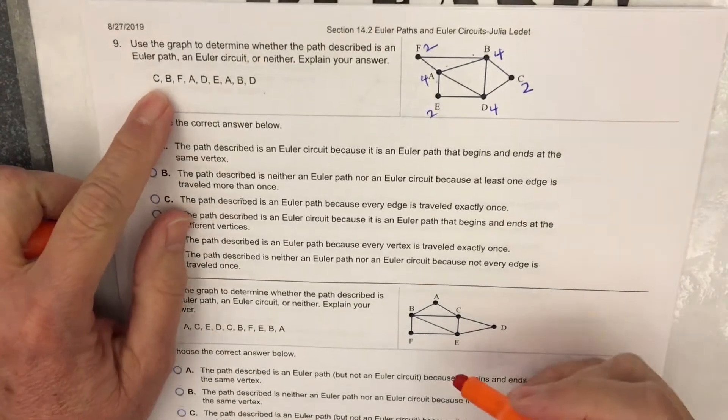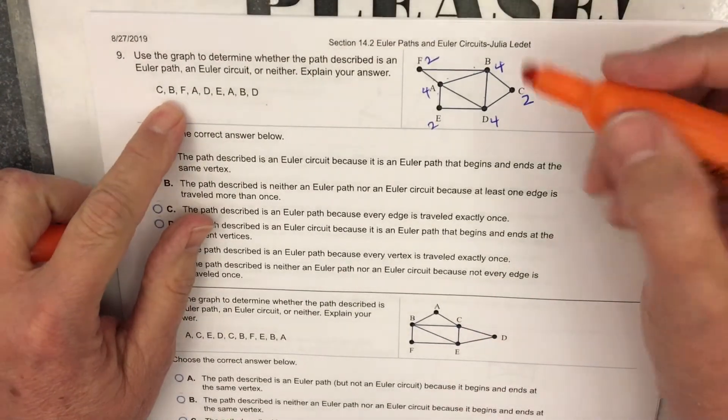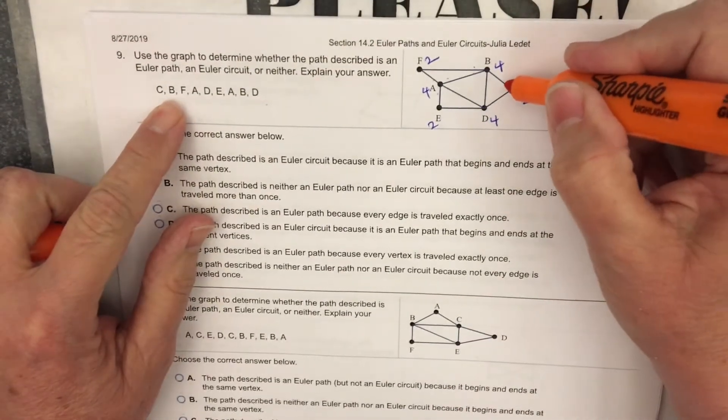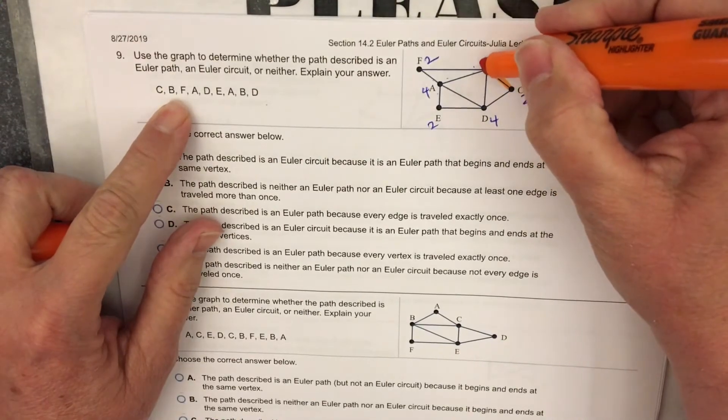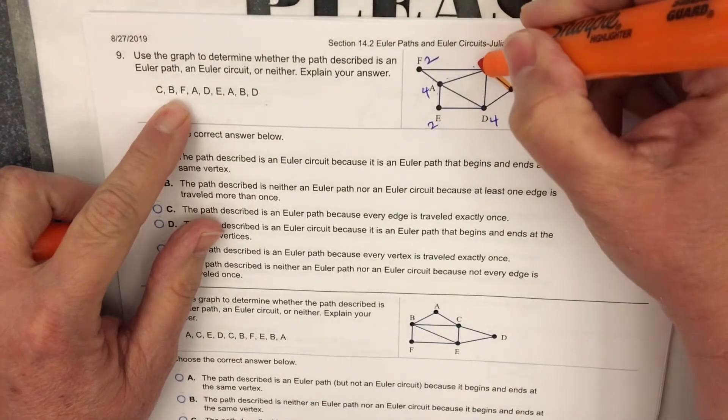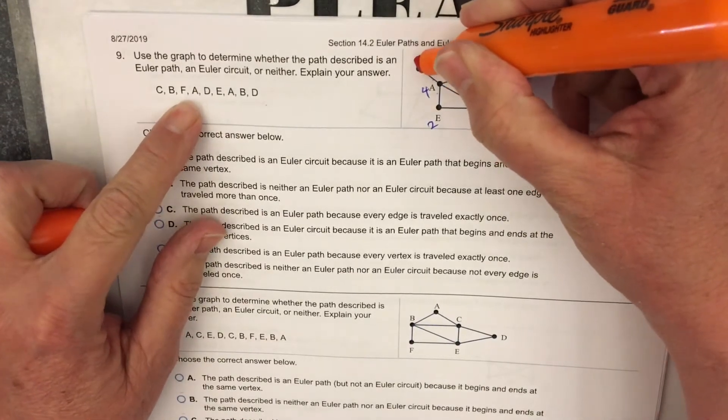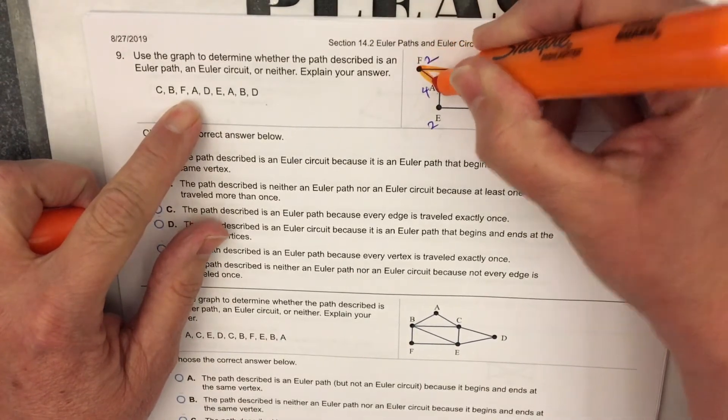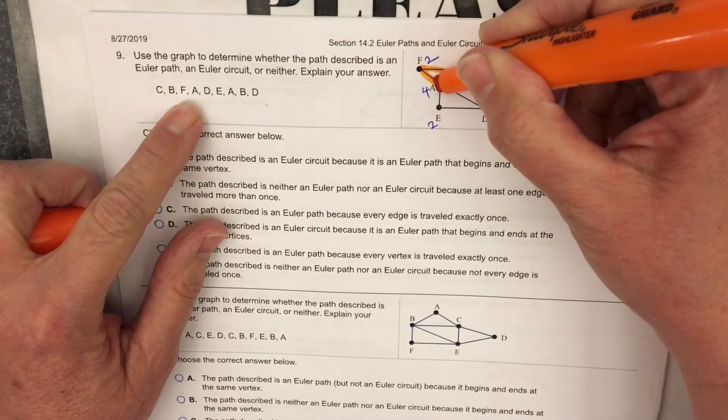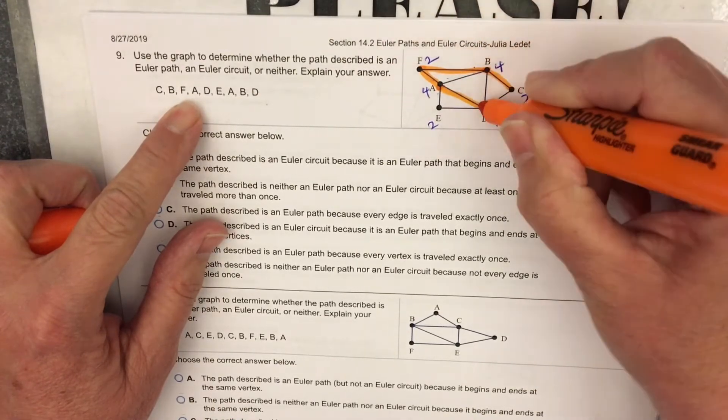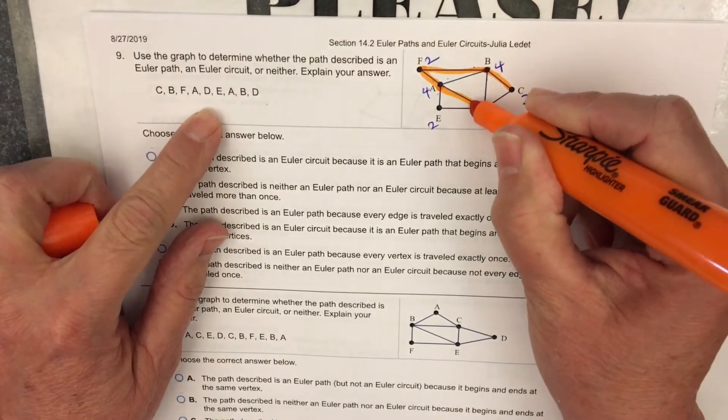Let's trace through it and see what we have. Start at C. I'll go to B. I would suggest on your scrap paper, especially when you're taking the test, when you're working at home, draw the picture and trace through it on your paper.